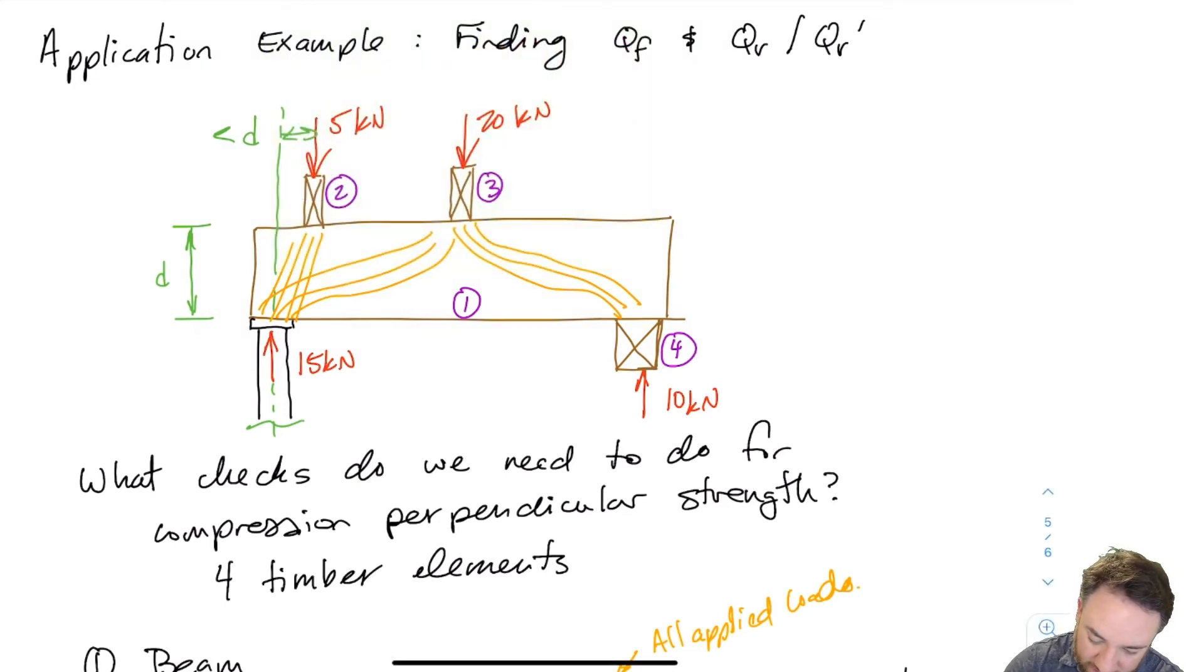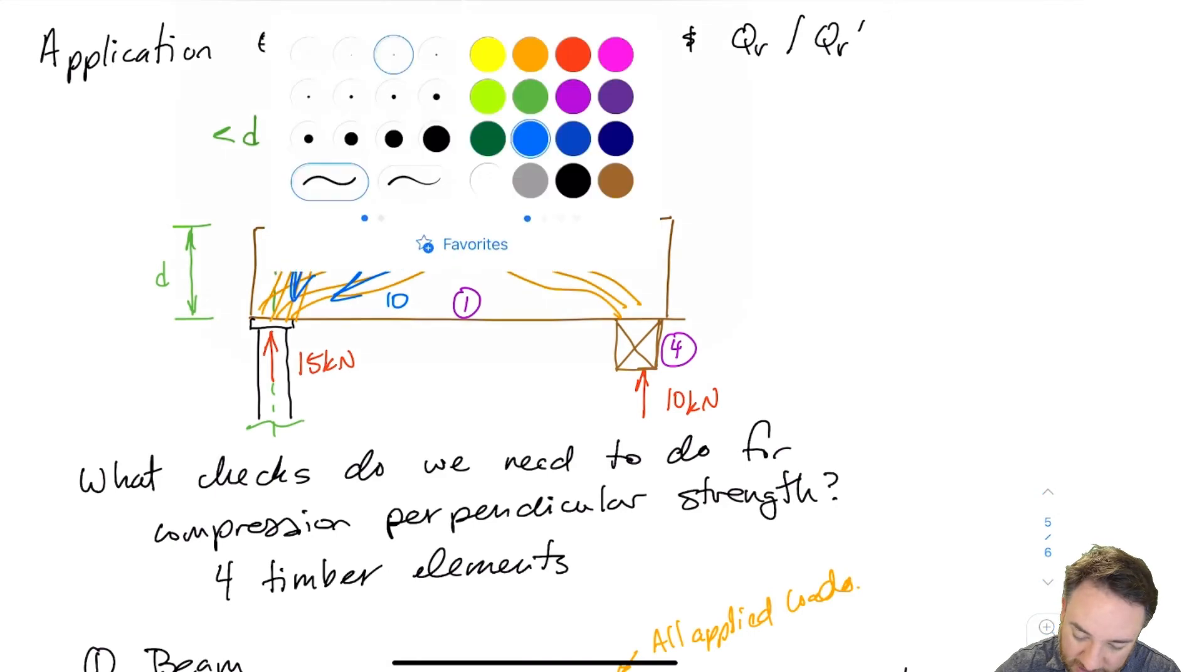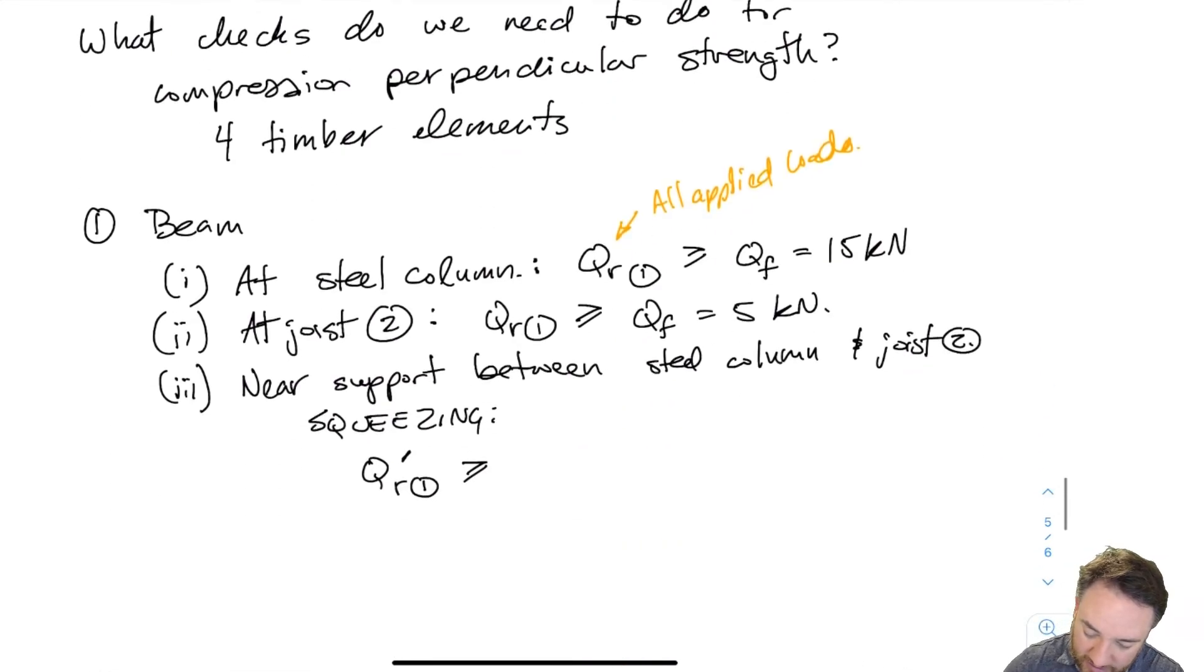One is coming across from the 20, right? 10 goes one way, 10 goes the other way. And then five is coming through here, right? So this is five. This is 10, right? And that makes up 15. But what is the portion of that load that's actually just the portion that's doing the squeezing all the way through? It's only the five. So that means here, I'm going to only check this against qf equals five kilonewtons.